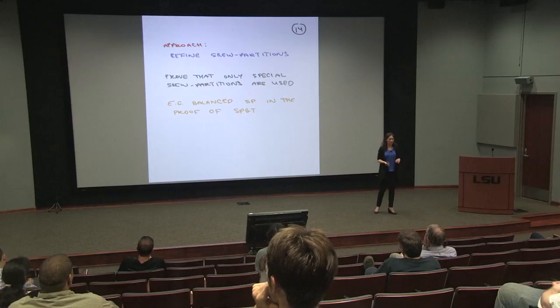The idea is we're not going to look at all skew partitions — only some of them. The way they're restricted will immediately imply that the decomposition tree you get is not too big.